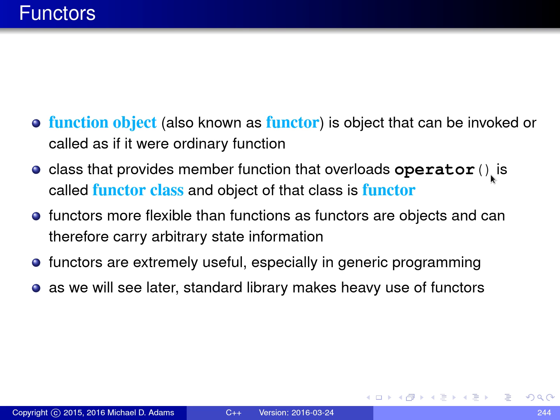Functors are very useful tools because they're much more flexible than functions. If you want to pass information into a function, the only good way to do this is to pass it as parameters. Functors, on the other hand, because they're class objects, can also have data members. So you can have many other pieces of information associated with a functor stored in data members. Functors have the advantage that not only can you pass information into them using the function call operator, but you can also store state information in data members, giving you additional flexibility. This is what makes functors very useful, especially in generic programming.